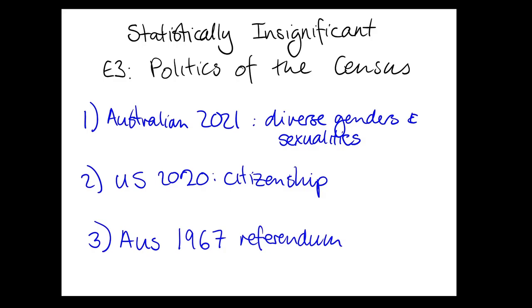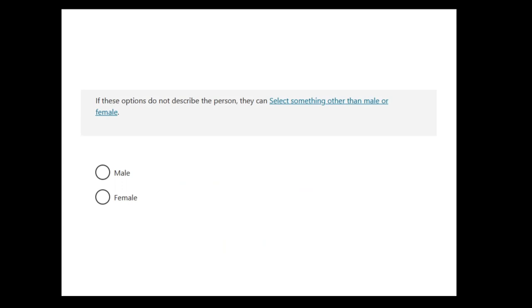It's just not representative, and that makes it really, really hard to develop public policy in order to incorporate these people. Especially when it comes to things like regional assistance — there's far better data on the out gay community in Sydney than there is on trans people living in remote Australia. We wound up with a single question about sex in the census. There was no question about sexuality and not even really a question about gender.